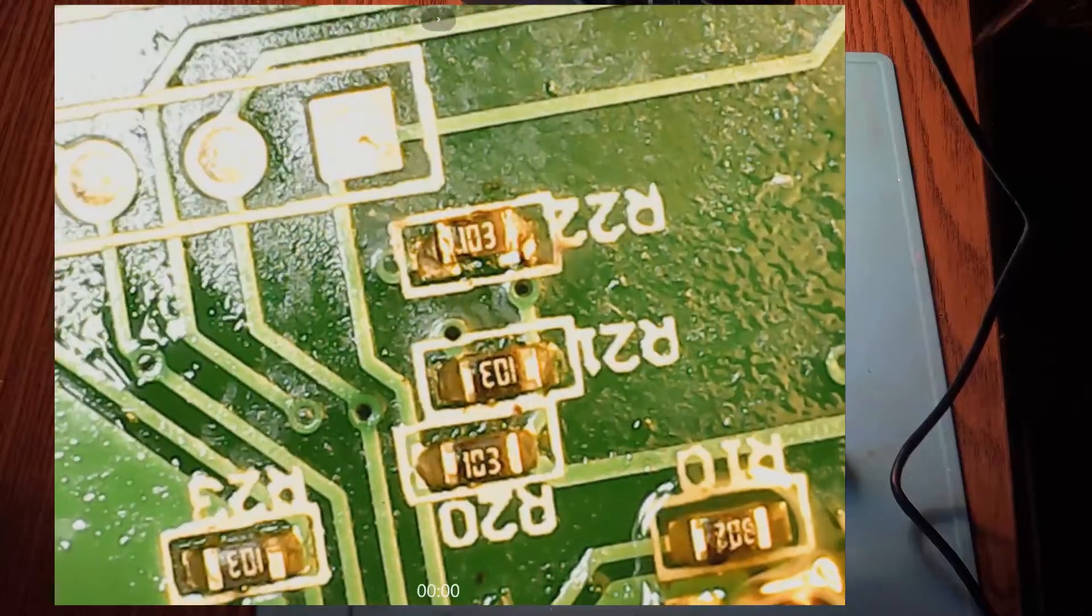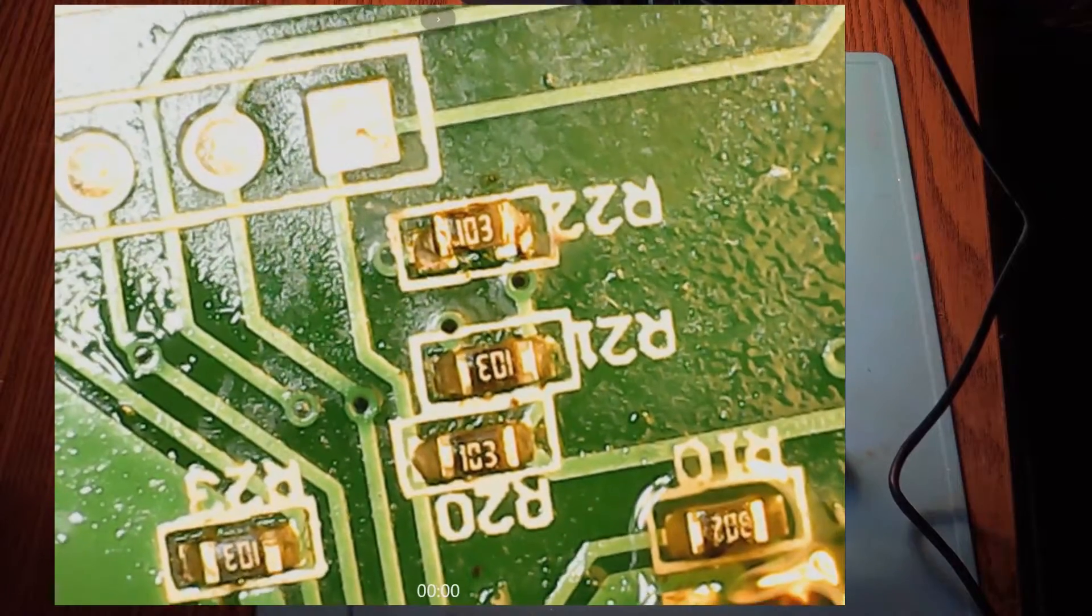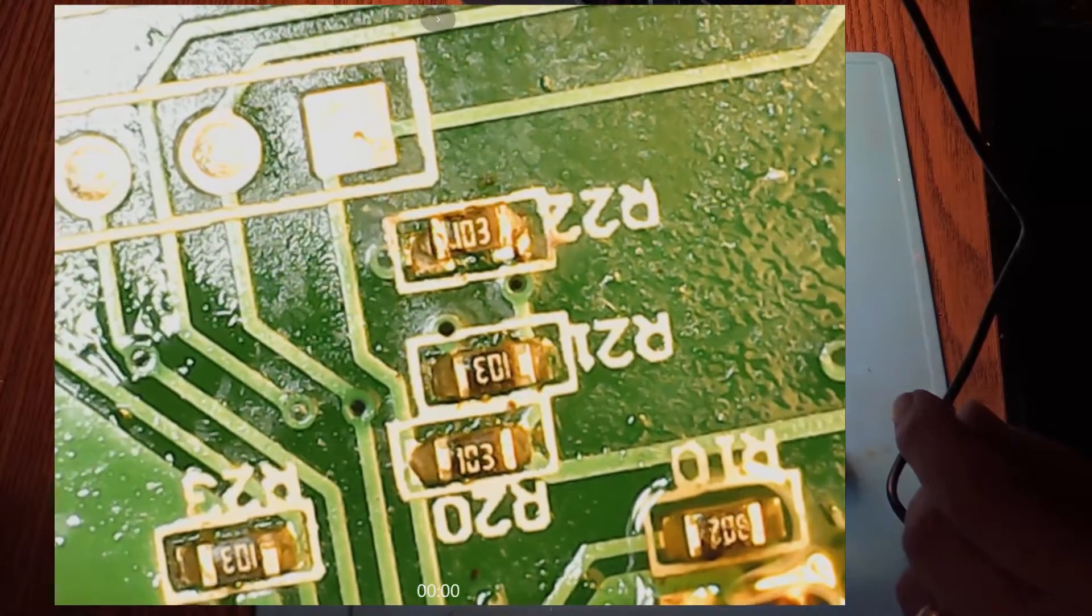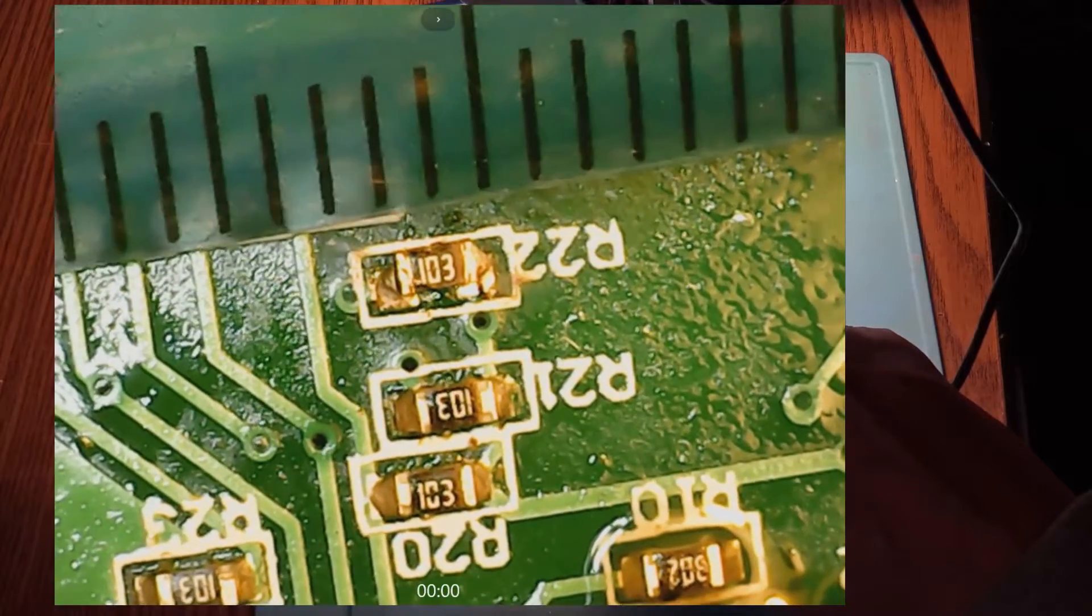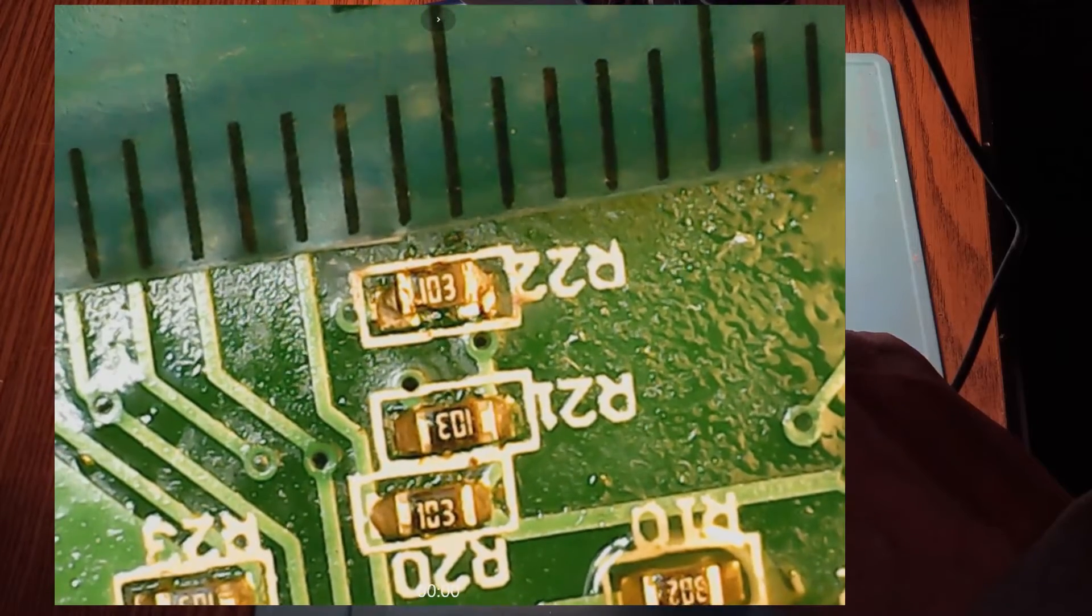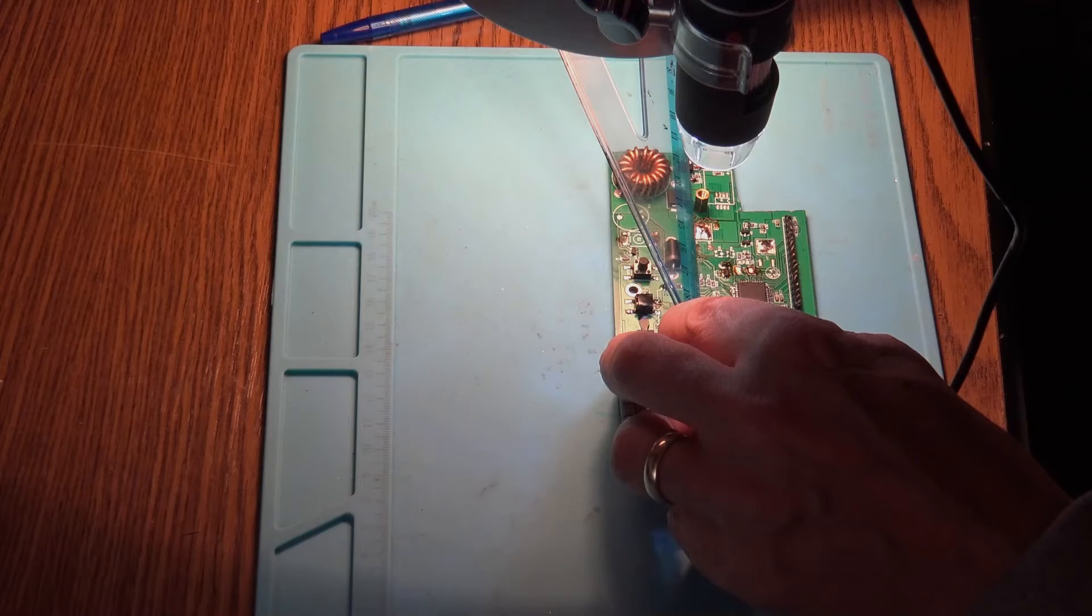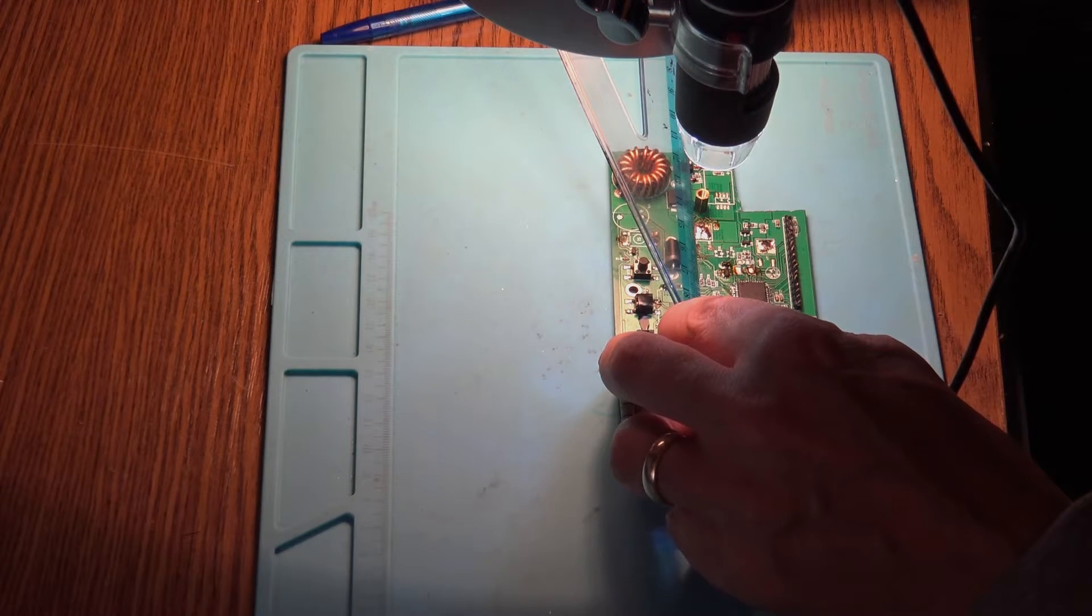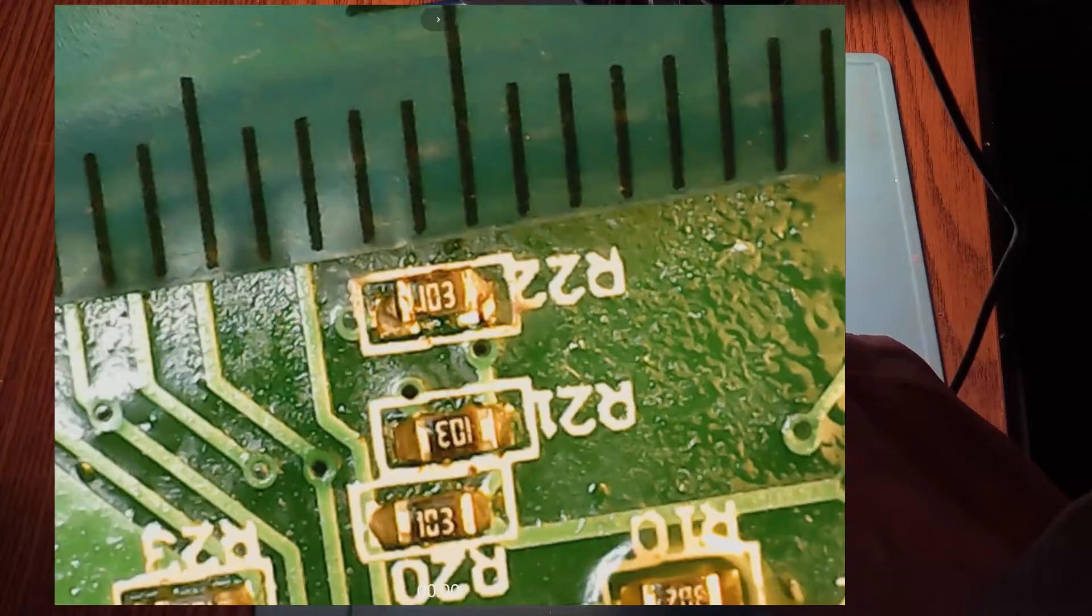You can't believe how tiny are these little parts. Let me show you. So we have a ruler here. That should be one millimeter, one point one or something. From there to there, one millimeter and a half. These are really tiny. These are millimeters, guys.